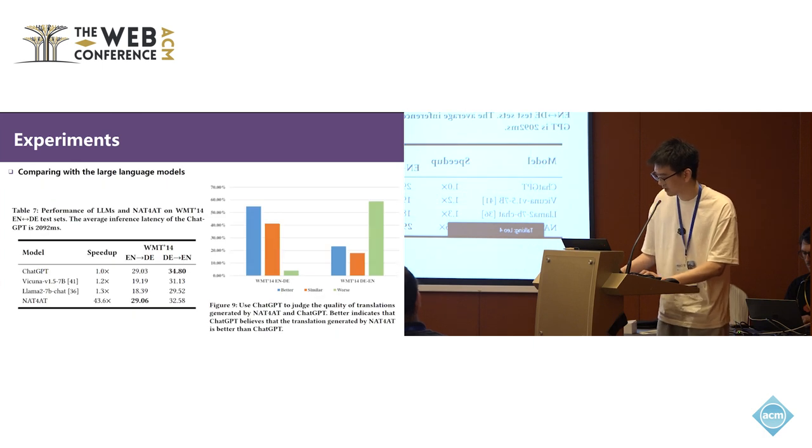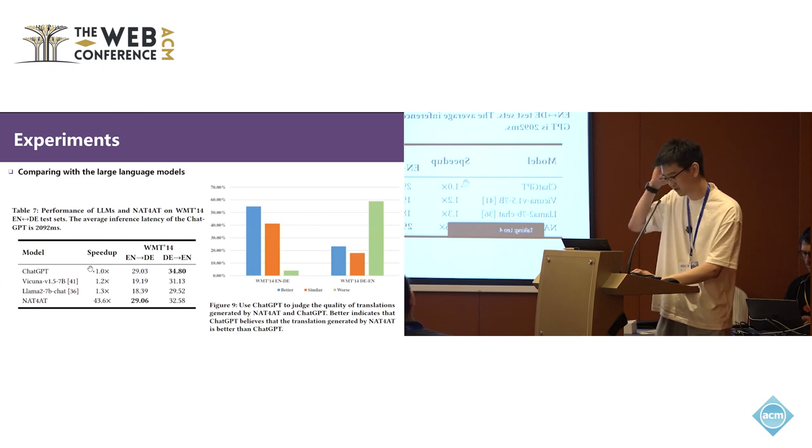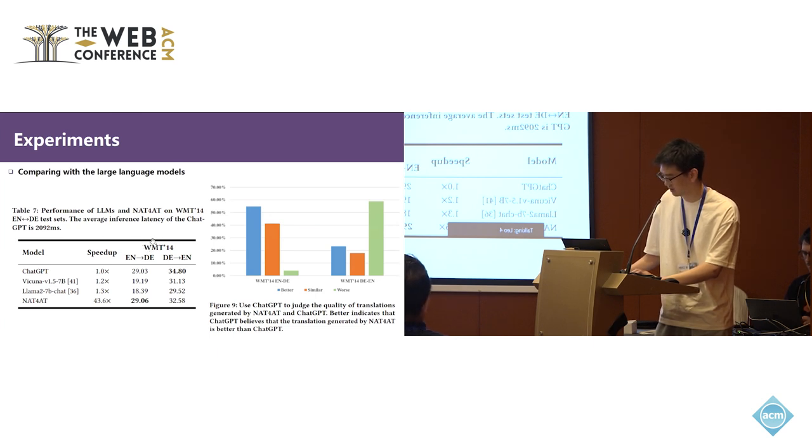We also compare our method with large language models, including open source and commercial models. As we can see, our method outperforms open source LLMs in both translation quality and inference speed. Although compared to ChatGPT, our method can still retain certain advantages, especially in English to German translations. We can even achieve better translation quality than ChatGPT.